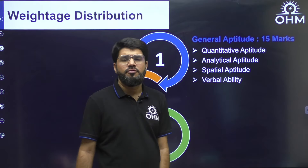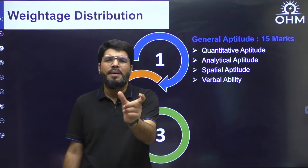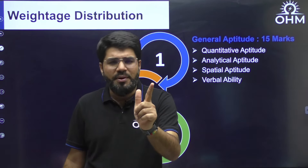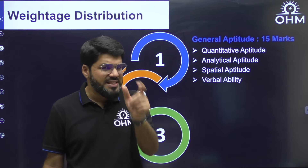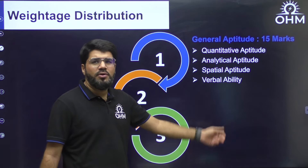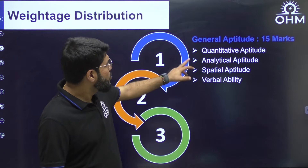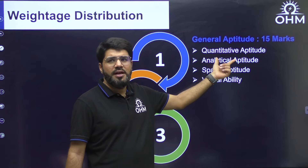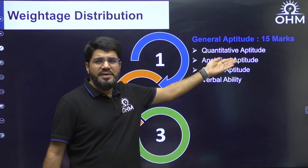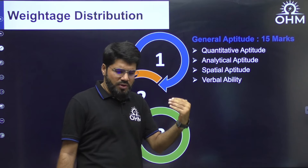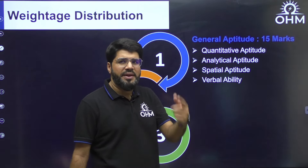Verbal ability won't be a big trouble since it's a two-to-three mark business in upcoming years. Quantitative aptitude is basic maths up to class 10. Analytical aptitude is basic logical reasoning — simple brain puzzles, nothing more. Spatial aptitude involves non-verbal reasoning with image-based questions. You can expect one or two questions from spatial aptitude and two from verbal ability. We have separate videos for important topics in aptitude.